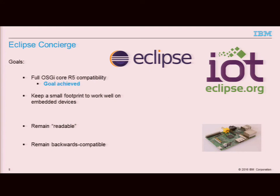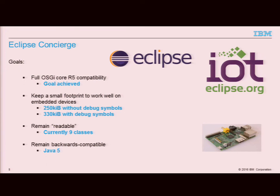So, where are we now these days? We were targeting full R5 compatibility and we achieved this goal. We were going for remaining small and readable and working well on embedded devices. Well, it's not 86 kilobytes, but if you don't need debug symbols, it's still 250 kilobytes, which is pretty good if you consider that quite a part of that is the OSGi API itself that has grown. So, it's still possibly the smallest implementation of an R5 framework. We want to remain readable — currently, we have nine full classes and I think 45 inner classes, which is a consequence of how Java is structured. But I would say the core of the framework is still relatively readable despite its unavoidable complexity.